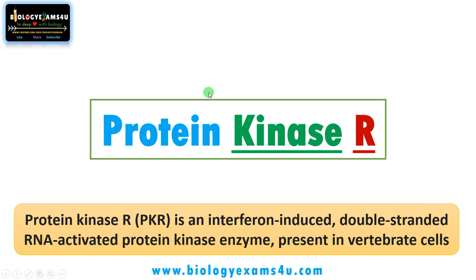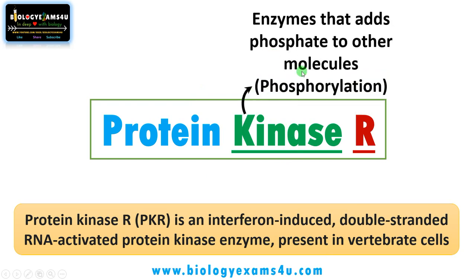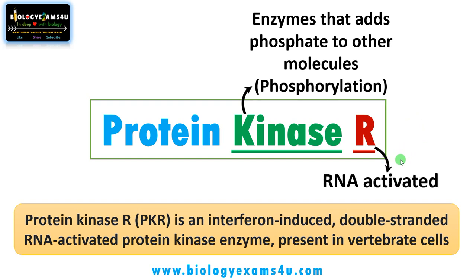Now let us see why this is called PKR or protein kinase R. Kinase means an enzyme that adds phosphate to other molecules like sugars and proteins — simply, a kinase enzyme is involved in phosphorylation or addition of phosphate. R stands for RNA-activated enzyme. So this enzyme is a double-stranded RNA-activated enzyme, and therefore it is called PKR or protein kinase R.